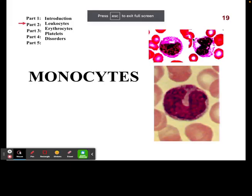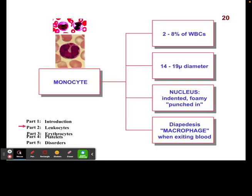Hey everybody. In this next video we are going to be discussing monocytes, the final white blood cell that we will be discussing. Monocytes make up 2 to 8 percent of all the white blood cells. They're a little bit larger compared to the other white blood cells, and here are a couple other ways you can identify the monocytes.